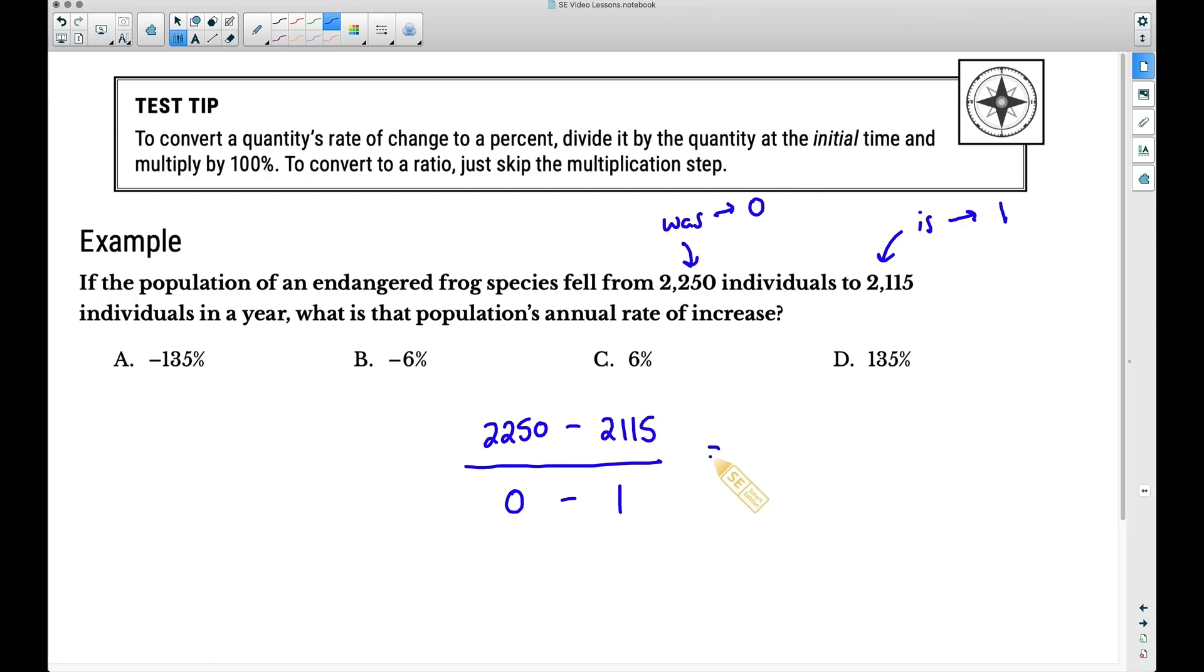2250 minus 2115, that is 135, zero minus one is negative one. In all honesty, it doesn't really matter as long as you understand that this rate here, negative 135, and this is frogs per year. That is exactly what happened when the population went from here to here. It decreased by 135 frogs. And now you may be thinking, alright, awesome, we have negative 135 percent, and that should be our answer, but that is not correct. This negative 135 does not represent a percent, and no, we don't want to just move the decimal. This negative 135 represents the number of frogs that essentially died. That is not a percent.